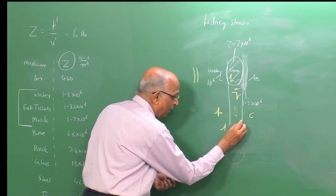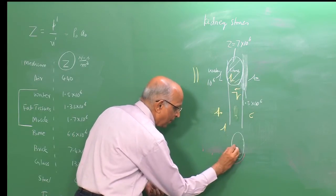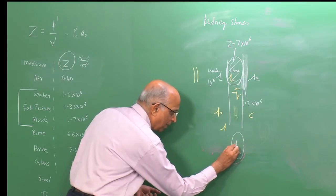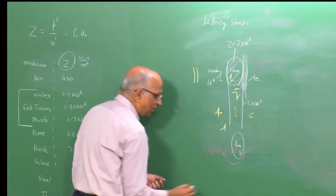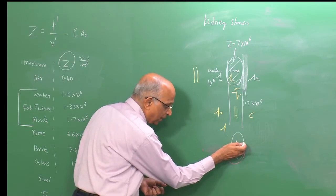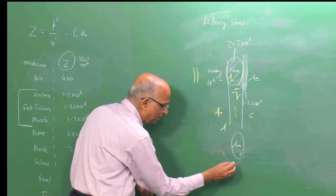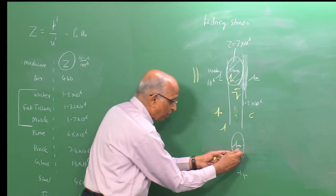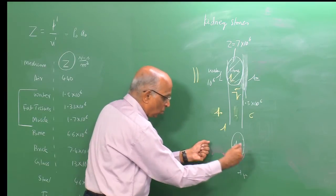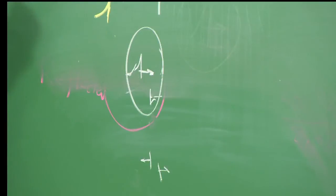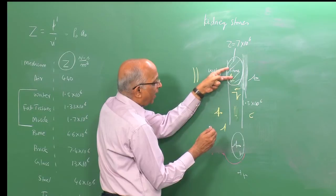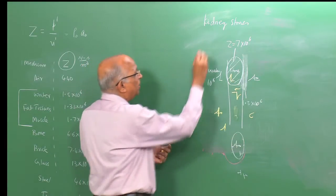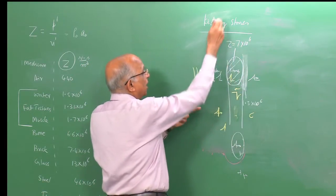The incident compression wave propagates in one direction and an expansion process takes place behind it. The particles in the stone are pulled apart due to spalling — tensile failure — and the stone fragments. By passing a shock wave into the kidney, the stone is fragmented into powder and expelled. This is one application of impedance matching to crush kidney stones.